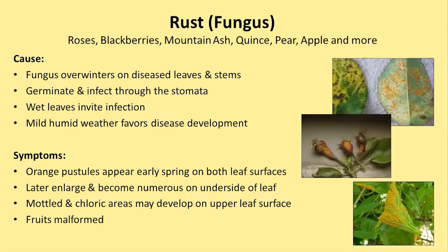Rust is a fungus found on many different plants, and it's fairly easy to diagnose because it looks like rust—orange-colored spots. It overwinters on diseased leaves and stems, germinates, and affects the stomata, which are the parts of the plant involved in the exchange of carbon dioxide and water. Wet leaves invite infection, so try not to let your leaves be wet in the evening. Mild, humid weather favors disease development, which sometimes we can't control.